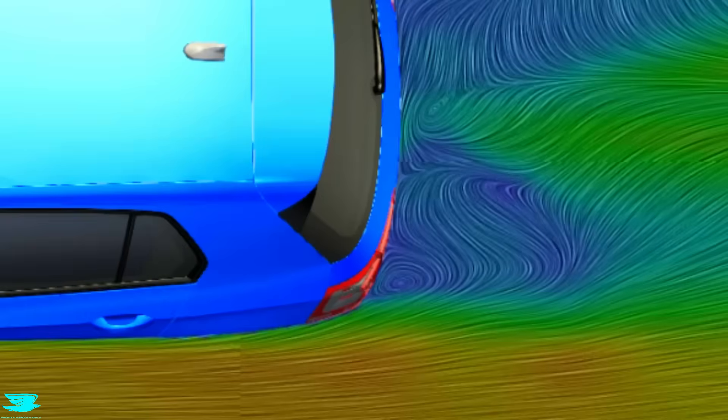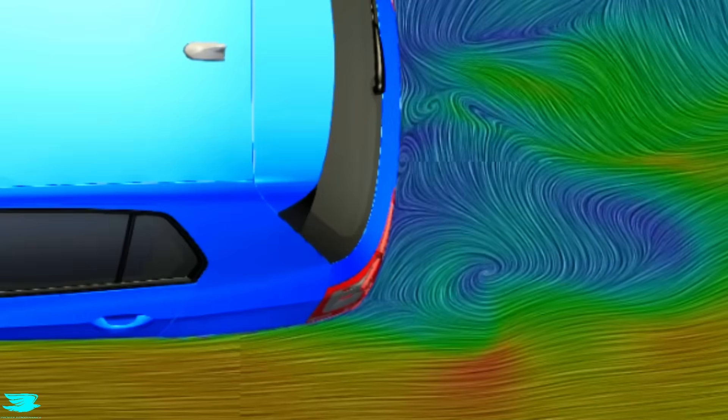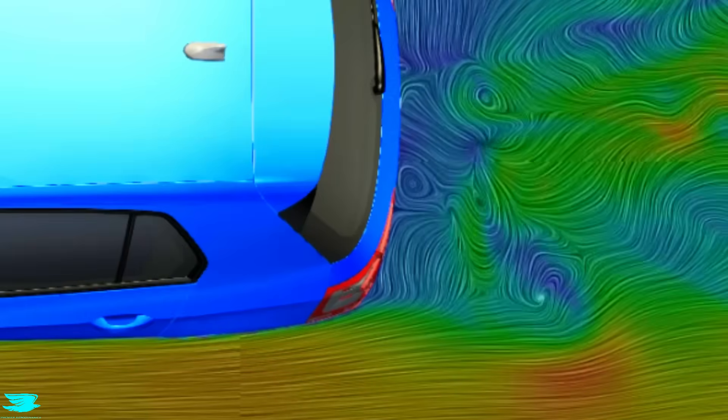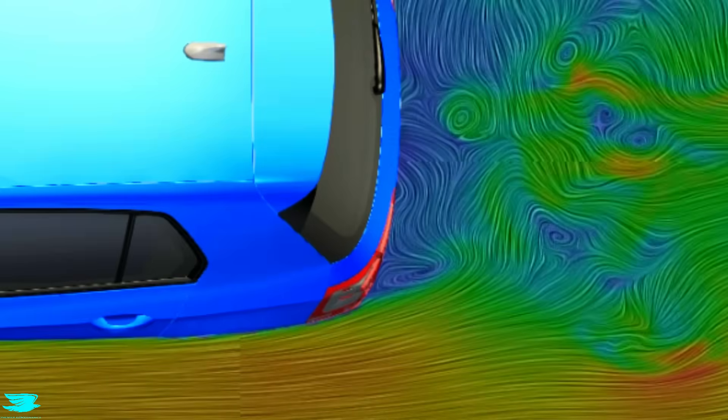Here, the flow separates quite far upstream and doesn't curve around the rear too much. That is why we get so much drag. I mean, if we go up even higher and compare this wake, look how tiny it is.